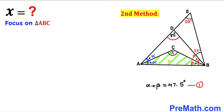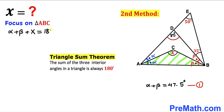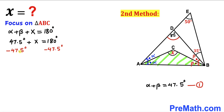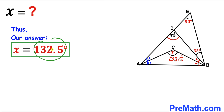Here's our final step. Let's focus on triangle ABC and recall the triangle sum theorem once again. The sum of these three interior angles must equal 180 degrees. So alpha plus beta plus angle X equals 180 degrees. Since alpha plus beta equals 47.5 degrees from equation 1, replacing it gives 47.5 degrees plus angle X equals 180 degrees. Subtracting 47.5 degrees from both sides, our angle X turns out to be 132.5 degrees — that's our final answer.